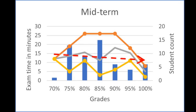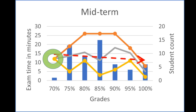Let's overlay the bars with three solid lines. They represent the time students need to finish an exam in that group. The three lines represent the longest, average, and shortest time in the group.